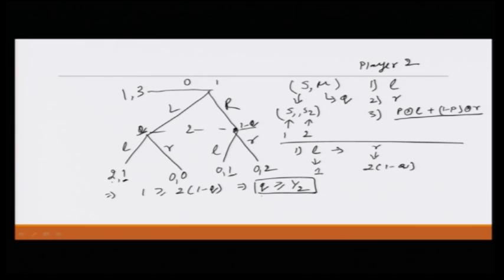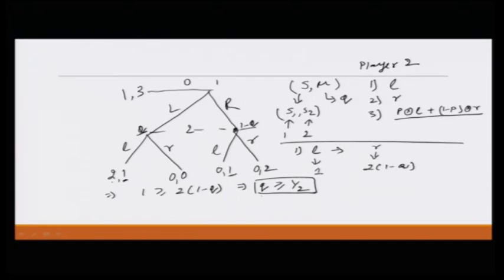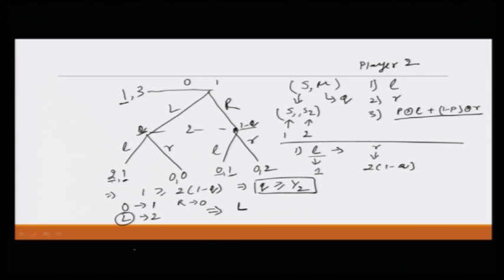Now let us look at the strategy of player 1. Player 1 can either play O, capital L, capital R, or some combination. If player 1 plays O, he gets 1. If player 1 plays capital L — given we have hypothesized that player 2 plays small l — then his payoff would be 2. So the best response from player 1 is to play capital L.